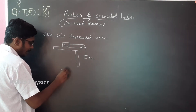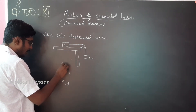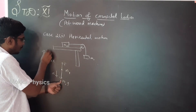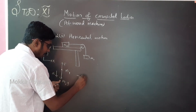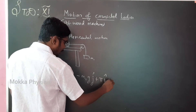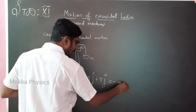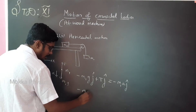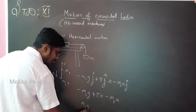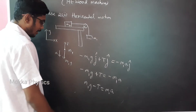Here is block m1 — free body diagram. Weight acts downward and tension acts upward, and acceleration is downward. Setting up the x-y axis, in the j-component: minus m1g plus T equal to minus m1a. Multiplying throughout by minus one: m1g minus T equal to m1a. This is equation one.